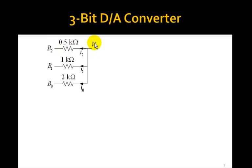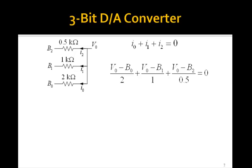Then V0, to compute the value V0, we can just use Kirchhoff's current law. We can sum the currents at this node to be equal to zero. So I0 plus I1 plus I2 is zero. And I0 is just V0 minus B0, voltage B0 divided by 2. We'll leave off the K. And I1 is V0 minus B1 over 1. And I2 is V0 minus B2 over 0.5.